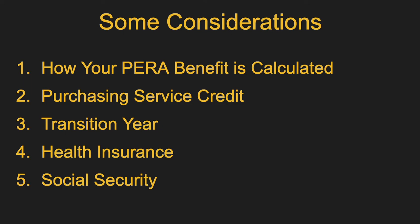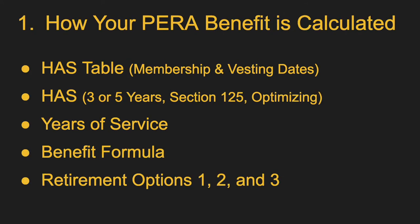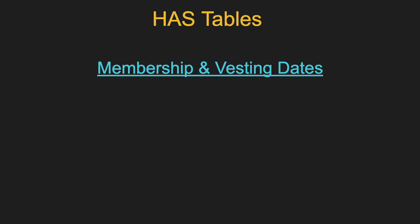So these are the five areas I'm going to cover at a high level. First, how your PERA benefit is calculated. Within this topic, I'm going to talk about five things, starting with your HAS table. HAS stands for Highest Average Salary. It's really important to know which table you are in for your retirement, and that is based on your membership and your vesting dates.